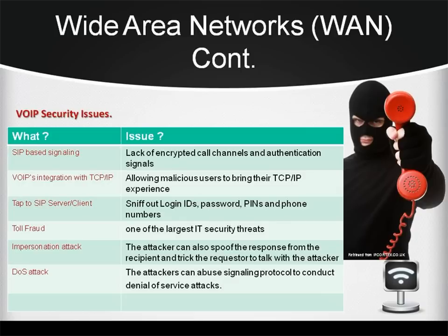Countermeasures include: keeping patches up-to-date on each network device involved with VoIP, identifying unidentified or rogue telephony devices, installing and maintaining firewalls and VPNs, and disabling unnecessary ports and services on routers, switches, and IP telephones.